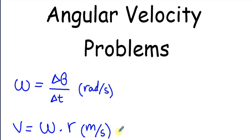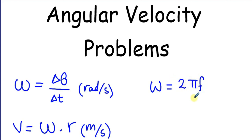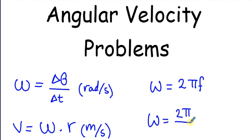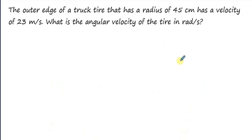The angular velocity omega can also be determined using the frequency: omega equals 2 pi f. Omega can also be determined using the period of rotation: omega equals 2 pi divided by T, the period.